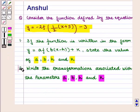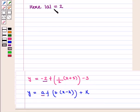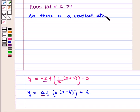In the second part of the question, we write the transformations associated with parameters a, b, h, and k. Using the key idea: the modulus of a is the modulus of minus 2, which equals 2, and since 2 is greater than 1, there is a vertical stretch by factor 2. Also, since a equals minus 2, which is less than 0, the graph is reflected over the x-axis.